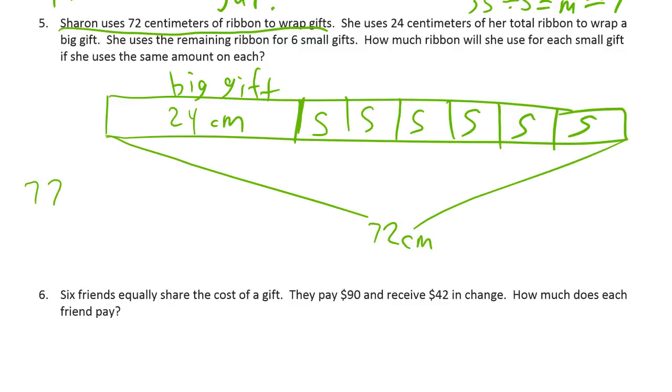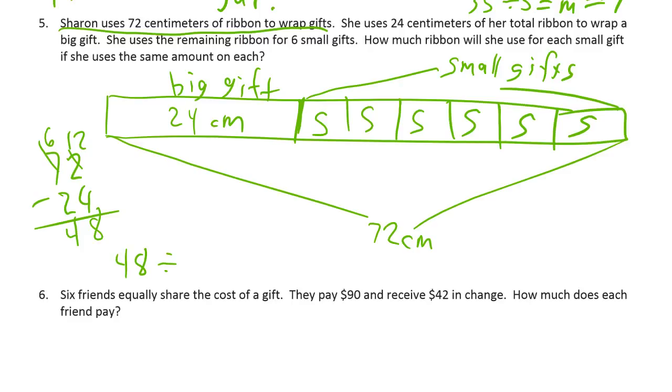And now you can figure this out. 72, and so we're going to figure out the total of the small gifts here by subtracting the 24 from the 72. 72 minus 24. And I can't subtract 4 from 2 so I got to break up one of those tens and now I have 12 ones. 12 minus 4 is 8, 6 minus 2 tens, 4 tens left, 48. So we know we have 48 centimeters of ribbon divided by 6 small gifts equals S and that's our equation.